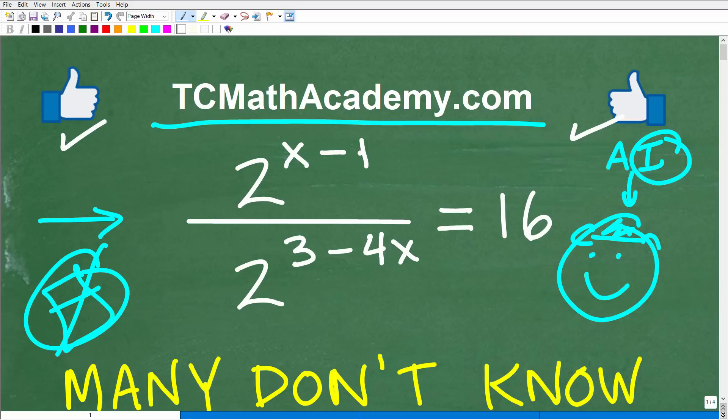We have 2 to the x minus 1 power, all that being divided by 2 to the 3 minus 4x power, and this is equal to 16. We want to solve for x. What is the answer?